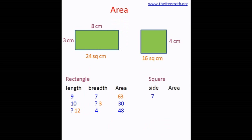Now let's go over examples for squares. If the side of the square is 7, the area is 7 × 7 = 49 square units. If the area is 100, what is the side? Since 10 × 10 = 100, the side is 10. If the side is 9, the area is 9 × 9 = 81 square units.